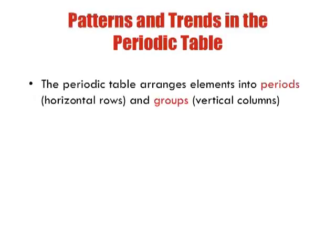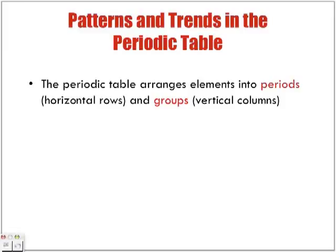A few patterns and trends you can observe in the periodic table: the periodic table arranges elements into periods, which are the horizontal rows, and groups, which are the vertical columns. We're not going to refer to them as rows or columns — I want you using the terms periods and groups.